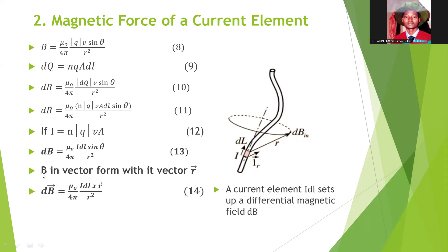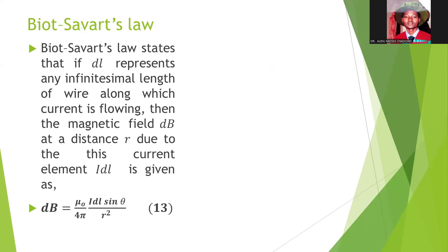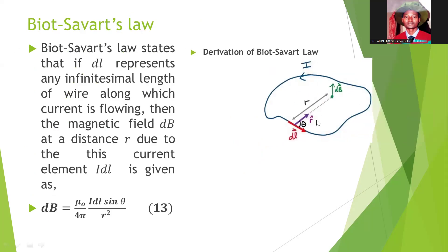We can write the magnetic field in vector form as equation 14. Equation 13 is called Biot-Savart law. The law states that the change in magnetic field of a small segment of a current carrying conductor at a distance r from the source point is expressed mathematically as equation 13.